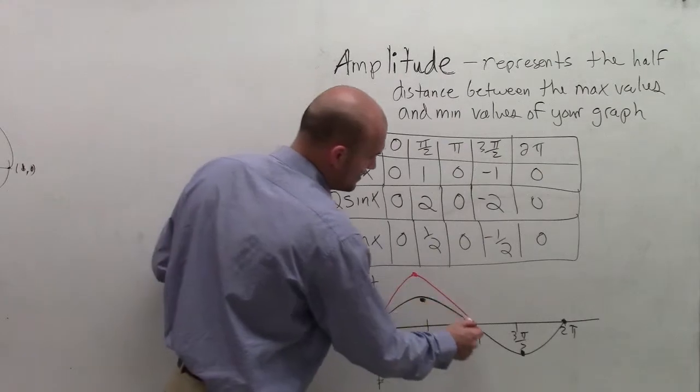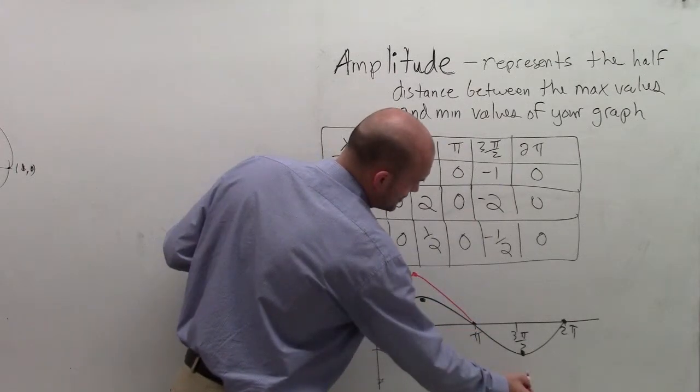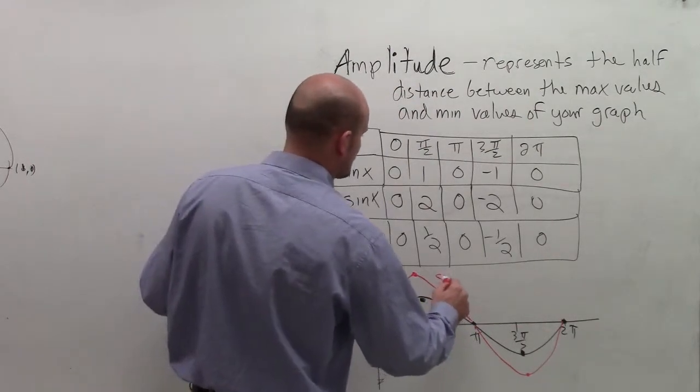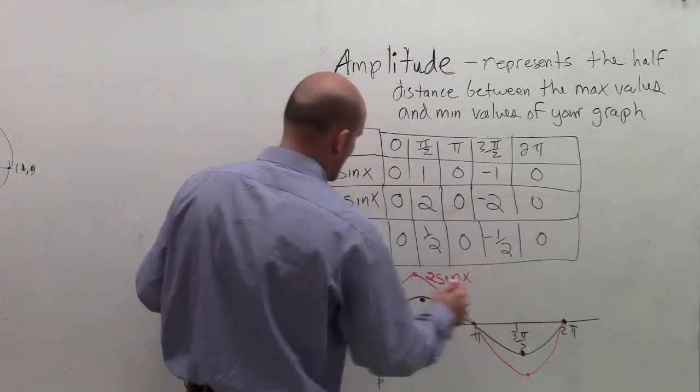Then it goes back down to 0, and now goes down to negative 2, and then back up to 0. So that's what we call our 2 sine of x.